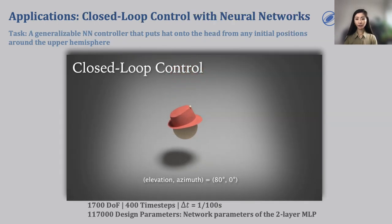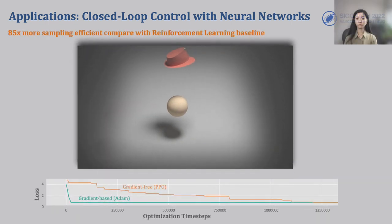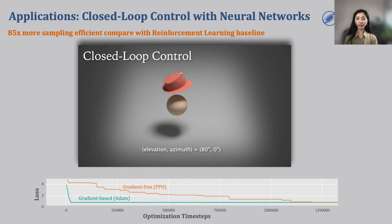Our differentiable simulator can naturally be integrated with machine learning frameworks. To highlight this ability, we demonstrate an advanced hat task that trains a closed-loop controller that embeds a neural network. The goal of this controller is to move the hat onto the head from any starting positions around the upper hemisphere of the head. The trained controller takes as input the state of the current hat mesh and end-effector positions, and outputs an action vector that dictates how the end-effectors should move in the next step. The design parameters are the network parameters of the two-layer MLP. Thanks to the gradient information provided by DIFFCLOTH, we are able to train this controller in a very simple, efficient way. Compared to reinforcement learning, which is a gradient-free learning method, our gradient-based method uses 85 times less simulation iterations to finish the training while achieving similar final loss.